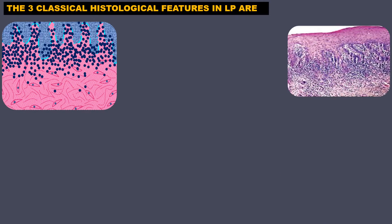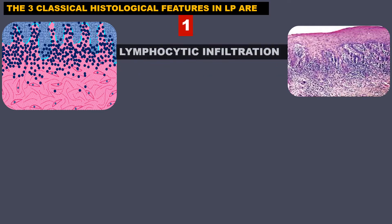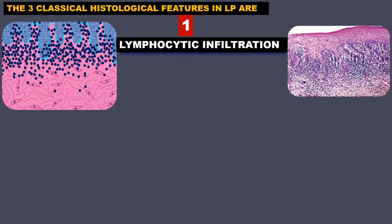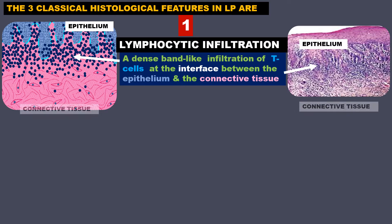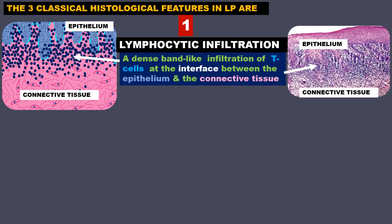Three classical histological features of lichen planus are: 1. Lymphocytic infiltration. There is a dense band-like infiltration of T-cells at the interface between the epithelium and the connective tissue.